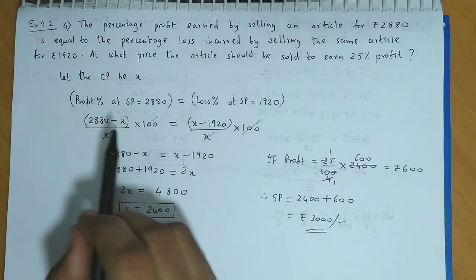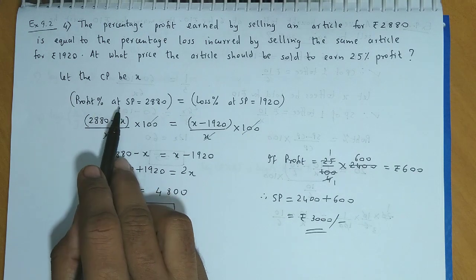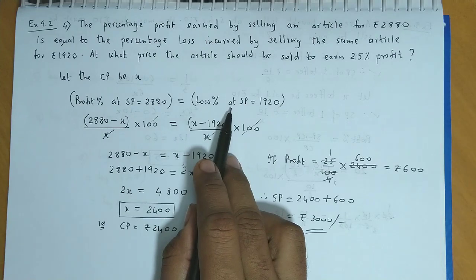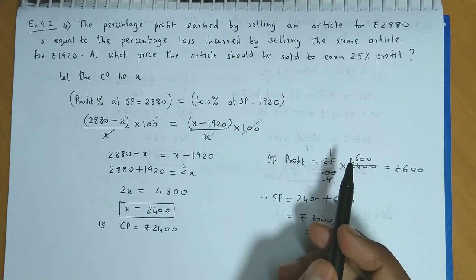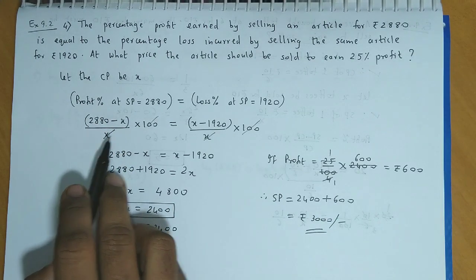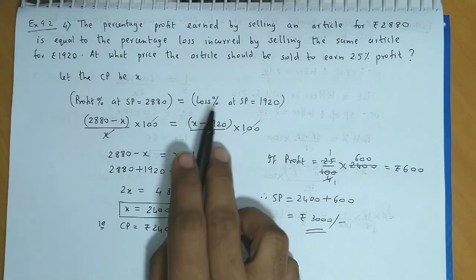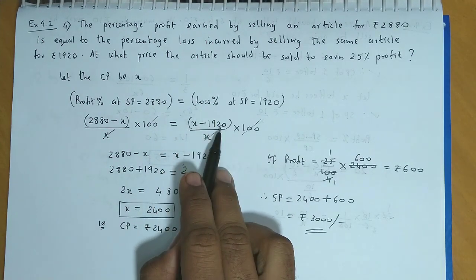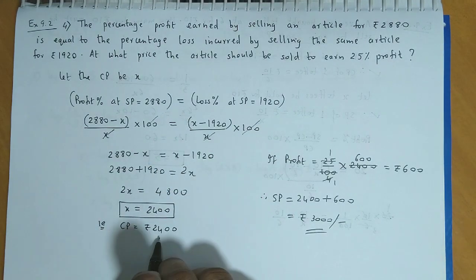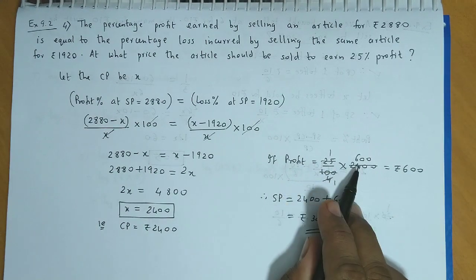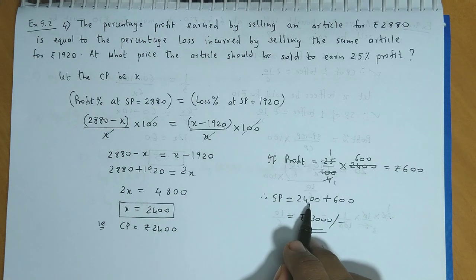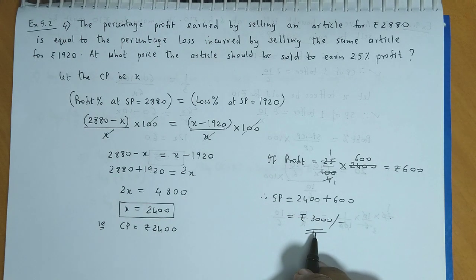So, remember यहां पर condition दी हुई है: the profit percentage when selling price is 2880 is equal to loss percentage when selling price is 1920. Now, we know that profit percent होता है SP minus CP upon CP into 100, and loss percentage होता है CP minus SP upon CP into 100. Simplify करके हमें cost मिल जाएगा 2400, फिर 25% उसका profit यानि 600 रुपया profit, तो selling price होगा 2400 plus 600, which is Rs. 3000.